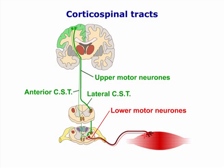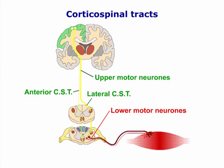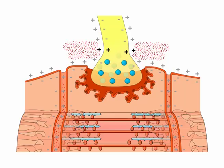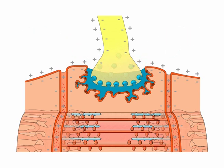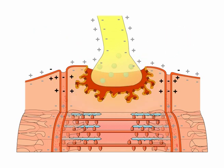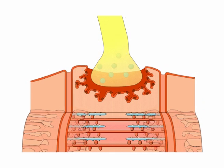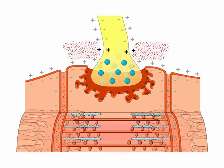Lower motor neuron impulses travel from the anterior gray horns of the spinal cord and then through the peripheral nerves. Here, the nerve impulses trigger the release of acetylcholine into the synaptic cleft of the neuromuscular junction, causing a cascade of biochemical events.